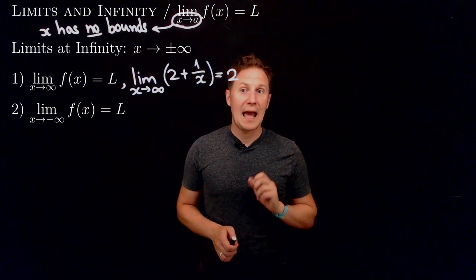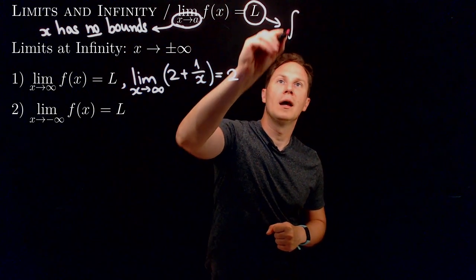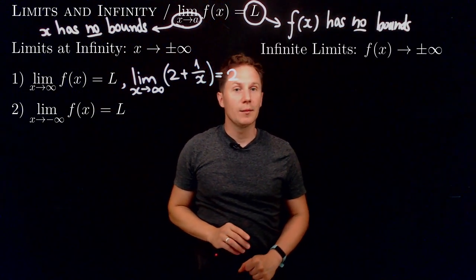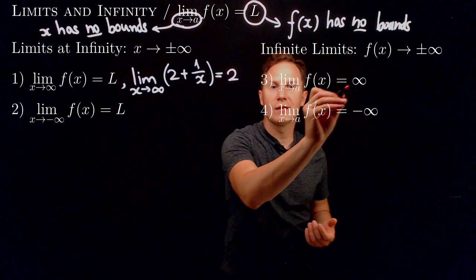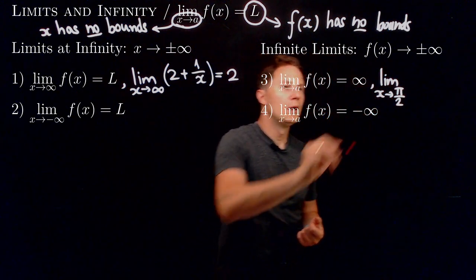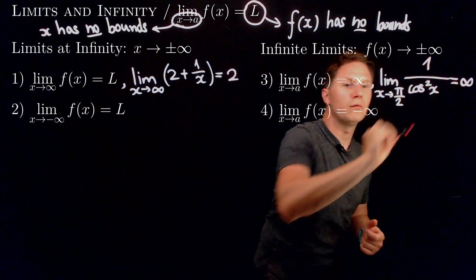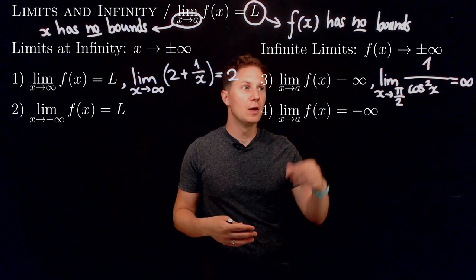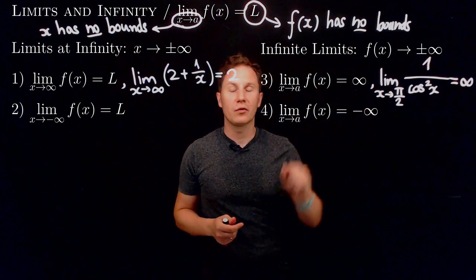Now, what if the values of the function f(x) have no bounds? Then we are dealing with infinite limits. f(x) could tend to positive infinity or negative infinity, giving us two cases. As a concrete example, consider the limit as x approaches the finite number π/2 of 1/cos²(x). This is an infinite limit equal to positive infinity, because as x approaches π/2, cos(x) approaches 0, its square also approaches 0 through positive numbers, so 1 divided by those shrinking positive numbers results in greater and greater values exceeding any upper bound.